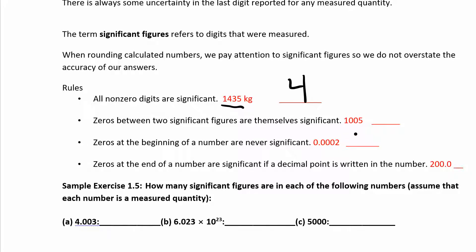If you have zeros between two non-zero digits, then they are significant — they're sandwiched between two non-zero digits, so they're all significant. For example, in a number like 1005, the one, both zeros, and the five are all significant, giving four significant figures. Just think: if they're sandwiched between non-zero digits, they count. Everyone loves sandwiches.